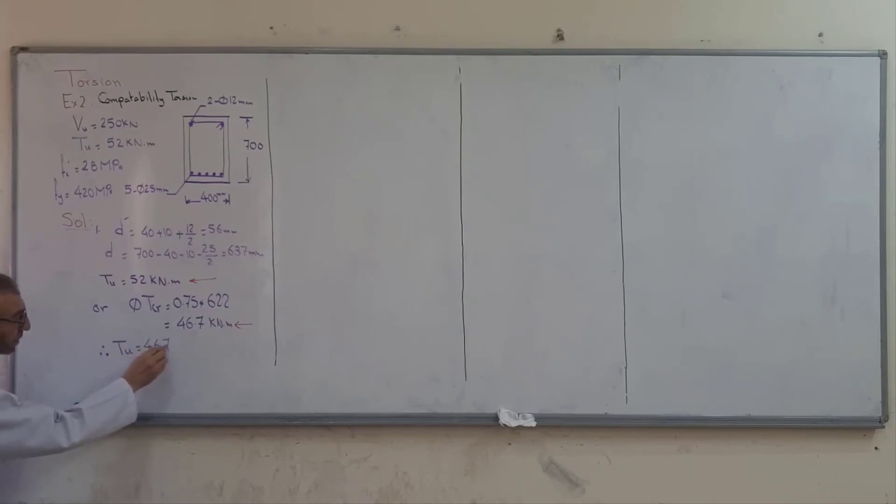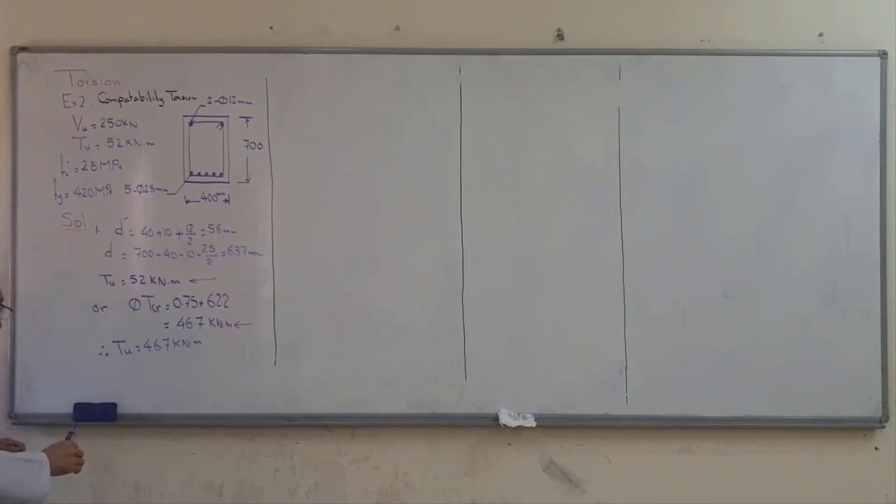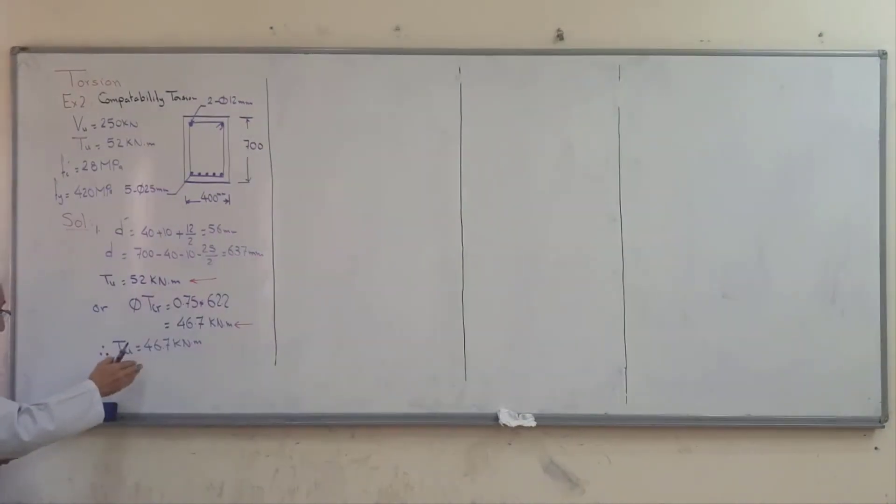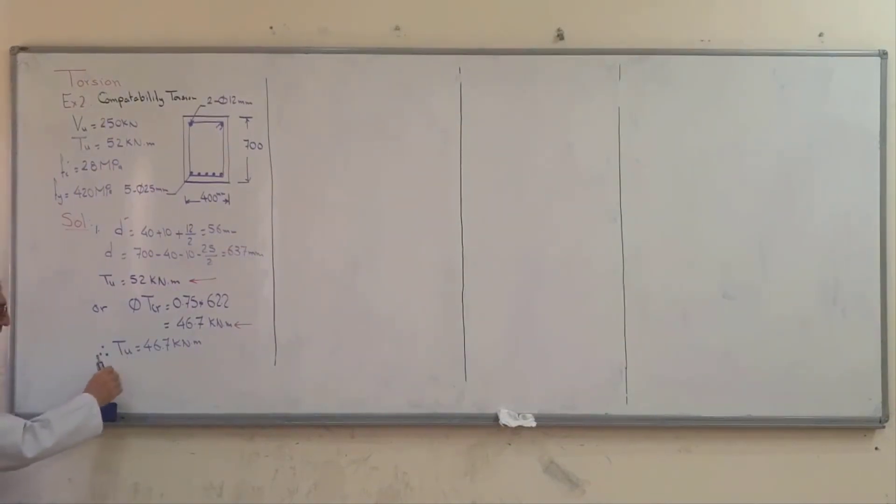All the next steps after this are similar to the previous example. We have TU equal to 46.7 kNm and VU equal to 250 kN. Now the torque is 46.7 and the shear VU is 250 kN. We can design for shear and torsion.